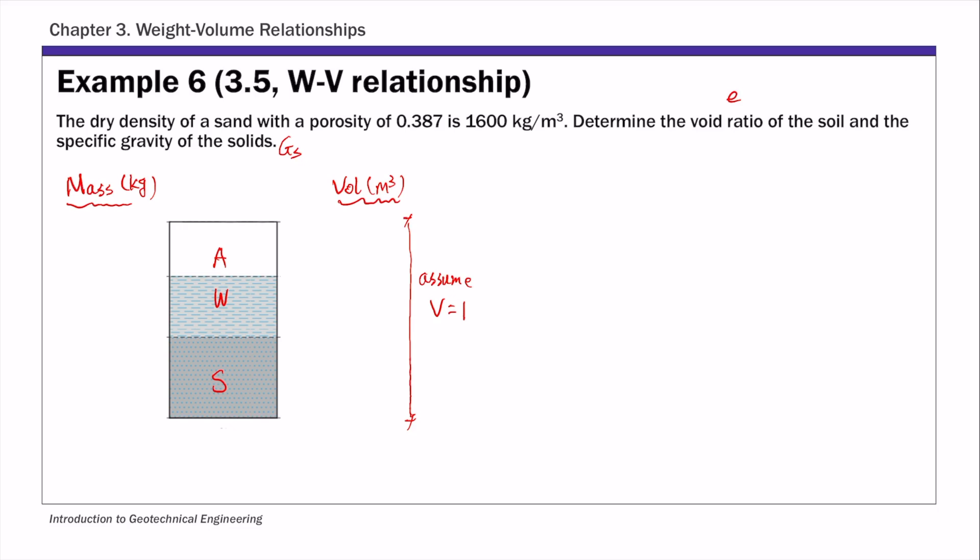Once we assume V equals 1, then the porosity 0.387 is defined as V of voids over total volume. Since total volume is assumed to be 1, then V sub v, the volume of voids, is porosity times total volume, which equals 0.387. And then the volume of solids is 1 minus 0.387, so that's 0.613. So we have the volume side completed.